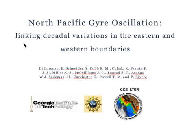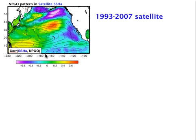We're now going to try to understand how the North Pacific Gyre Oscillation, the NPGO, is useful in linking decadal variations in the eastern and western boundaries of the North Pacific. First, let's get a look again at the large-scale spatial pattern of the NPGO in the satellite sea surface height over the North Pacific.